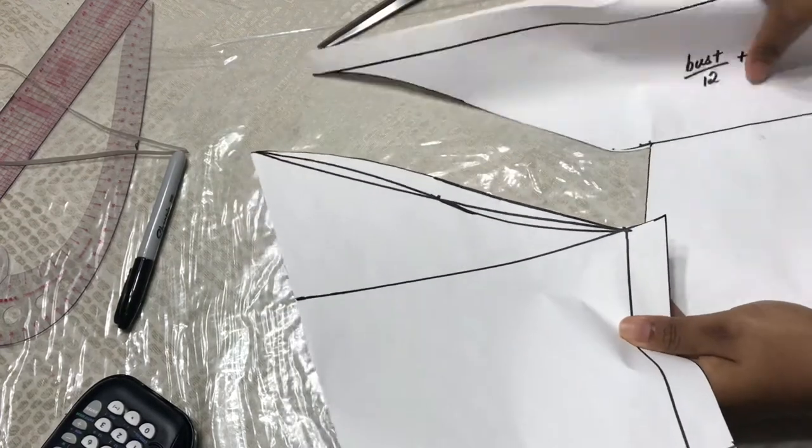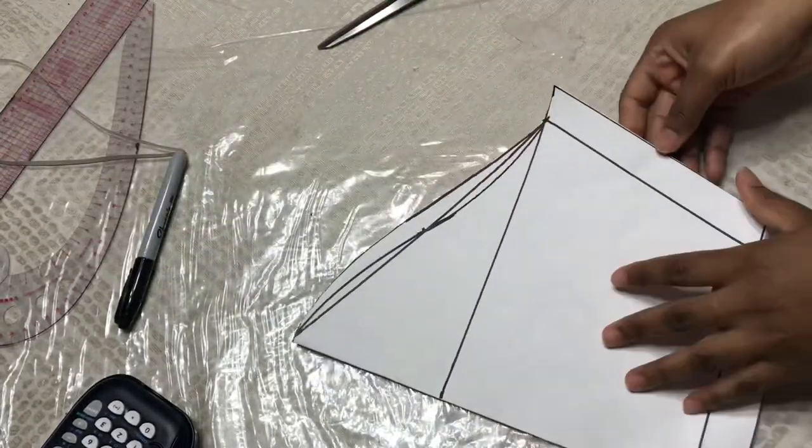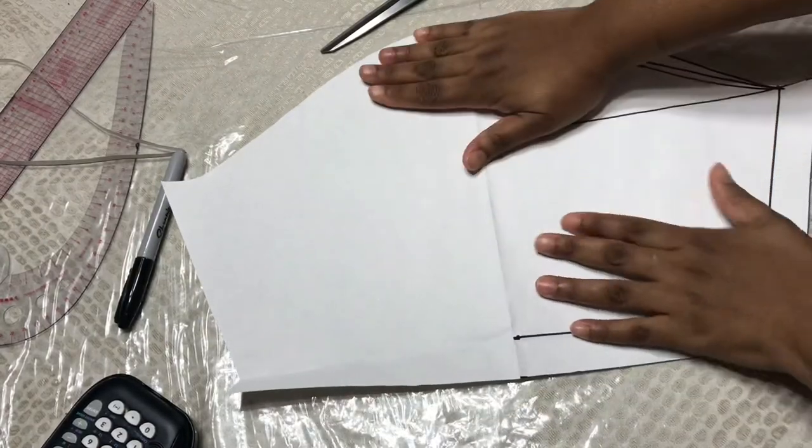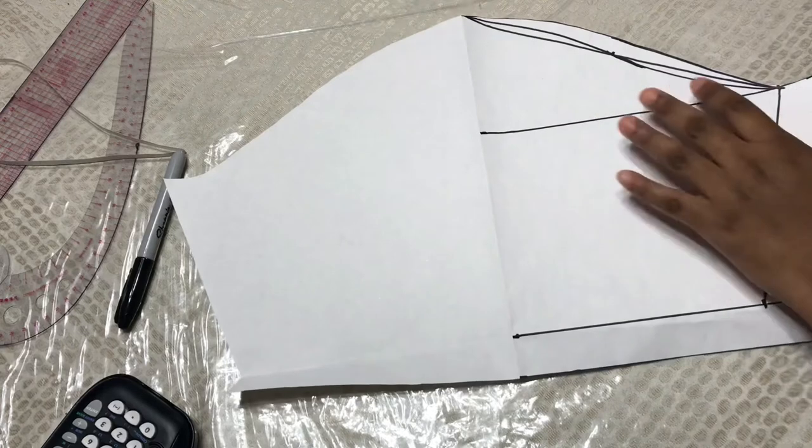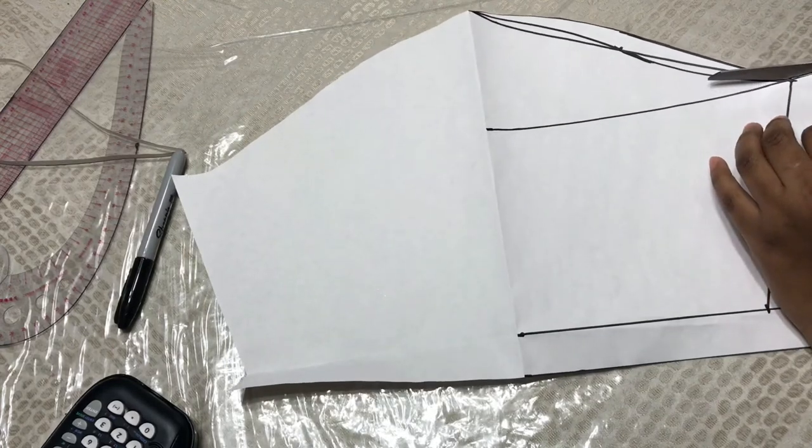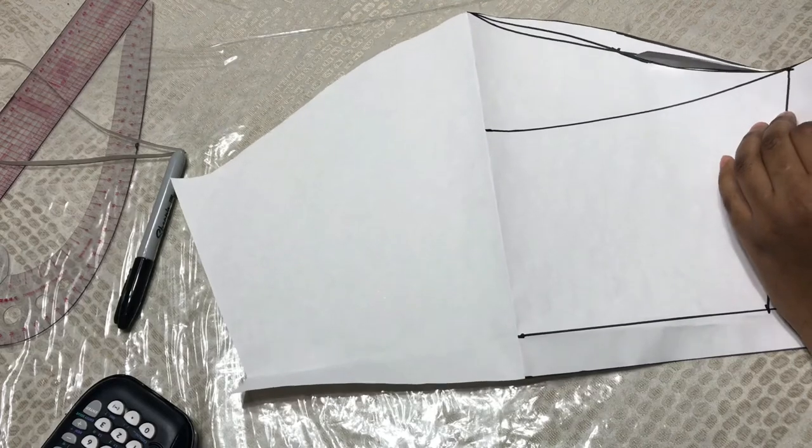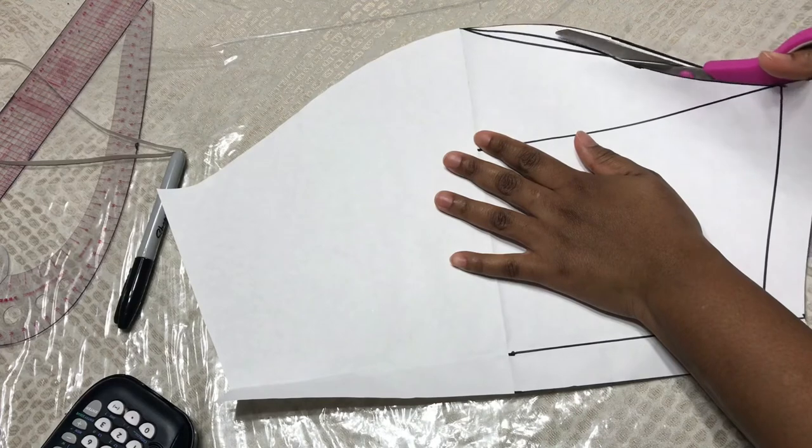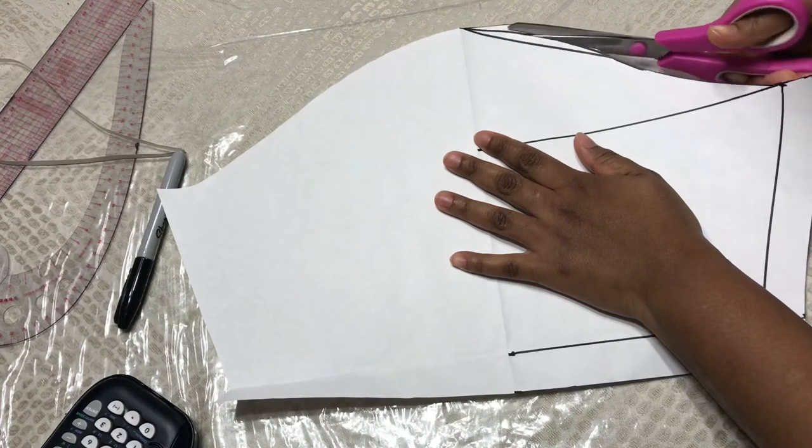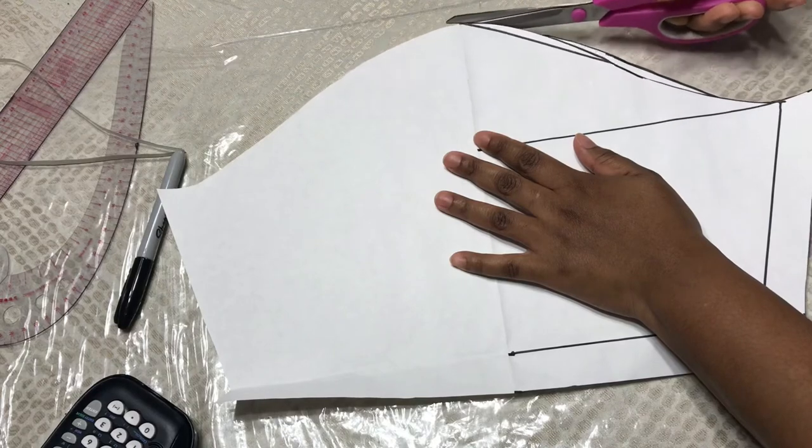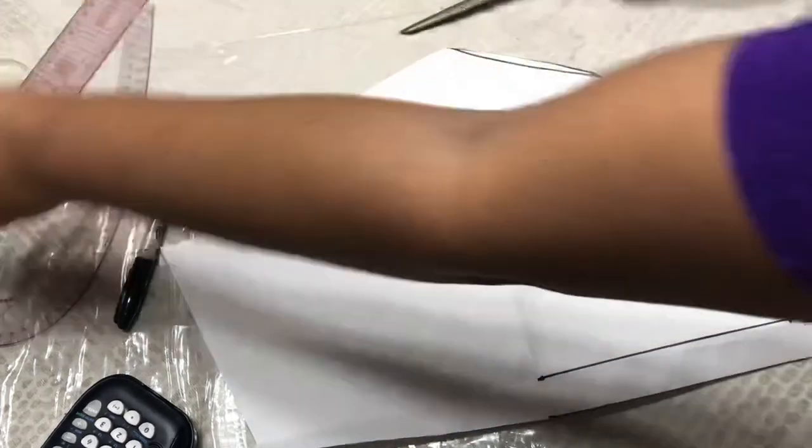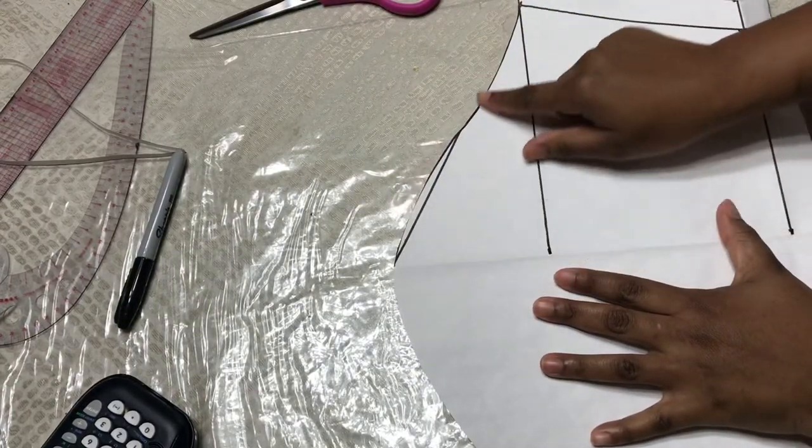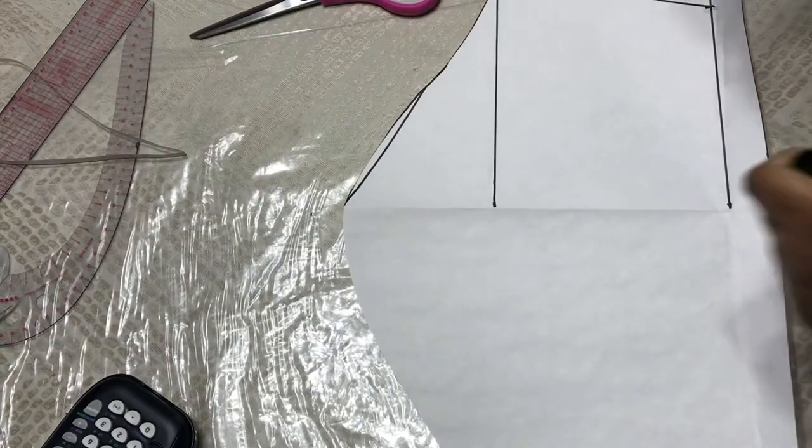All right, so this is the back of the pattern, and then you're going to cut off the front. Make it into a nice S shape. And that is the front, and this is how you draw your basic sleeve pattern.